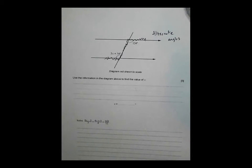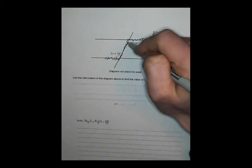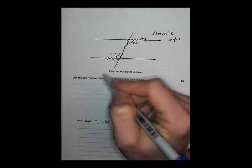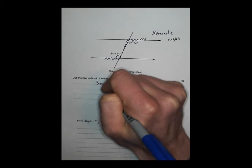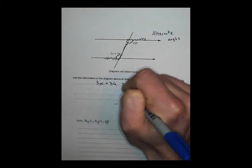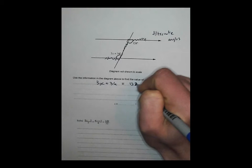So what do we know about alternate angles? Well, we know the angles inside a z are equal. Alternate angles are equal. So therefore, we can write a statement. 3x plus 34 must be equal to 124.